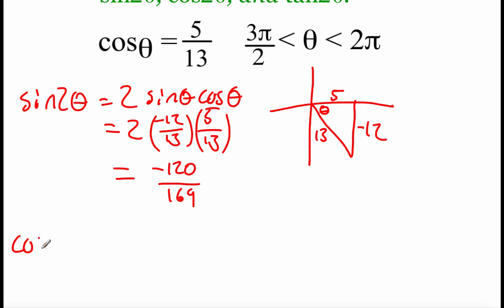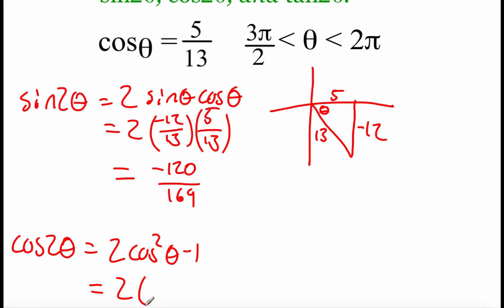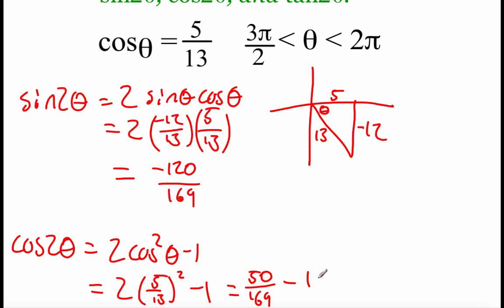For cosine of 2 theta, we have three different formulas — I'm going to use 2 cosine squared of theta minus 1. Filling in our cosine value of 5 over 13: we square that to get 25 over 169, multiply by 2 to get 50 over 169, then subtract 1. To subtract we need common denominators, so we make 1 into 169 over 169. Carrying out the subtraction gives us negative 119 over 169 for cosine of 2 theta.